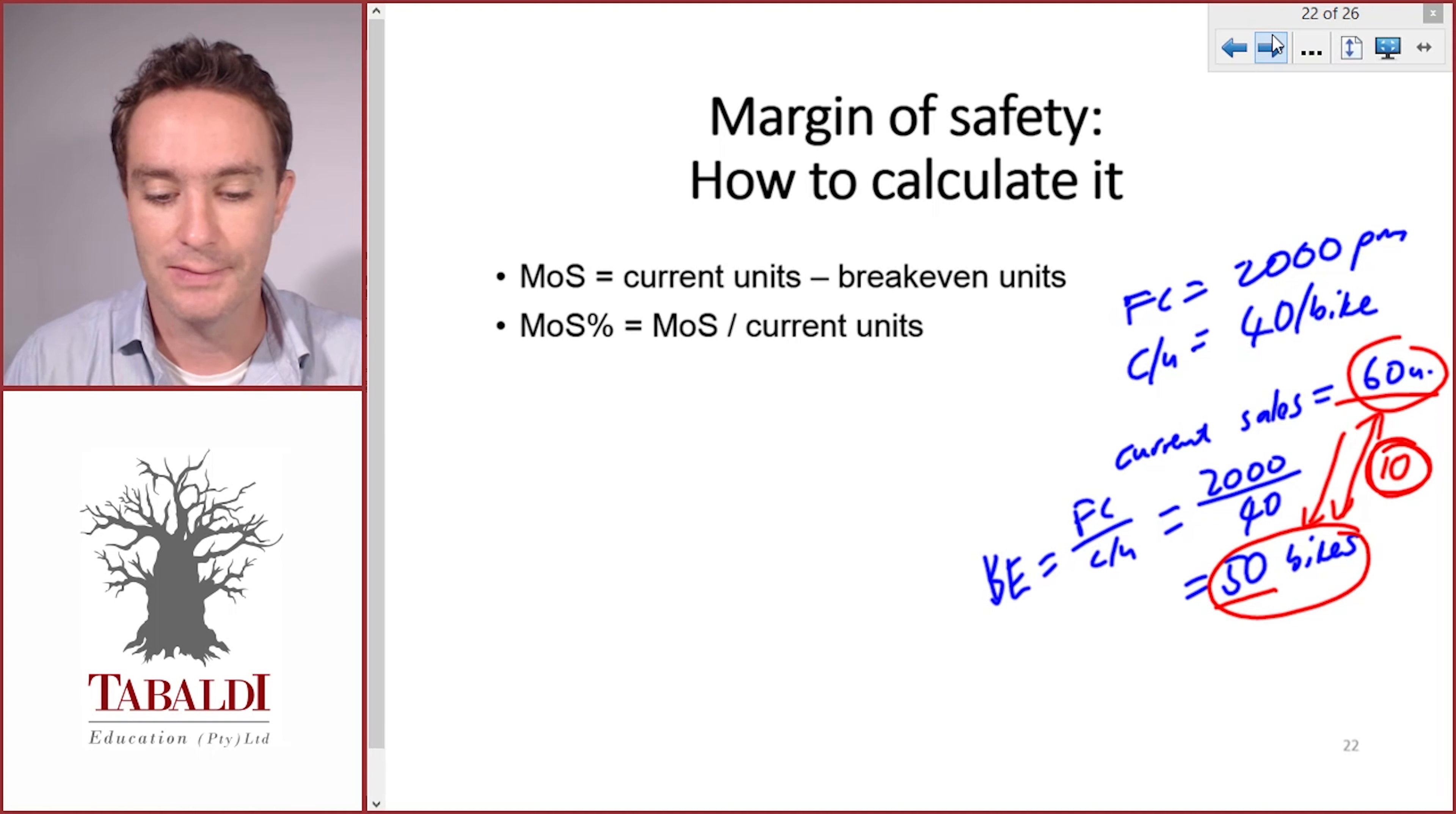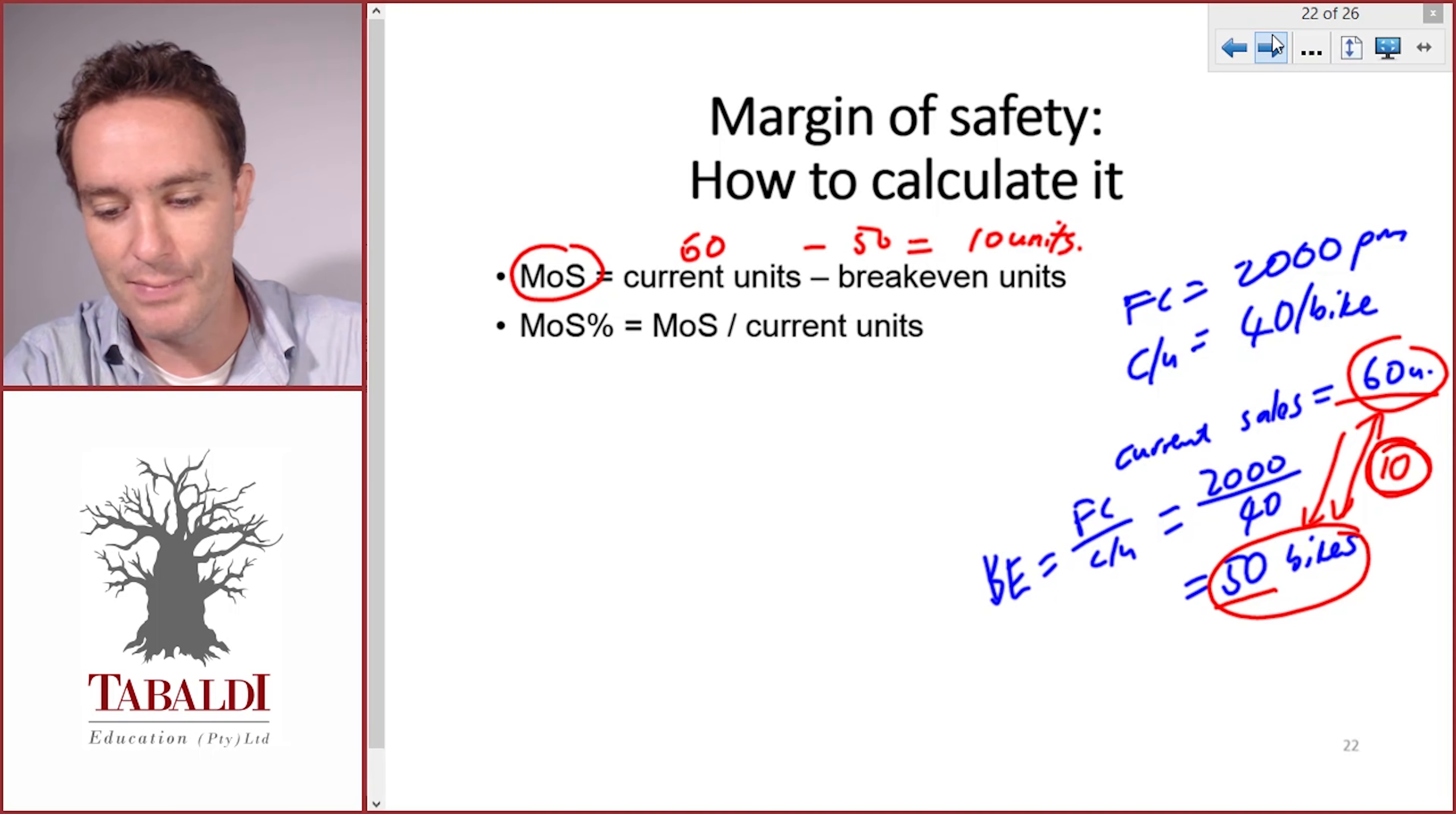Margin of safety is the current units less the break-even units, and that gives us 10 units. We could express it in units, so we've got 10 units to play with before we start making a loss.